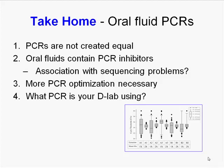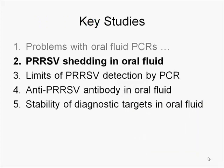This inhibitor issue could also explain why direct sequencing from oral fluids has sometimes failed — PCR inhibitors may be affecting our ability to sequence directly. This is not the end of the story; we've made progress but need more. We need to continue PCR optimization, and as a consumer you should check which PCR your laboratory is actually running.